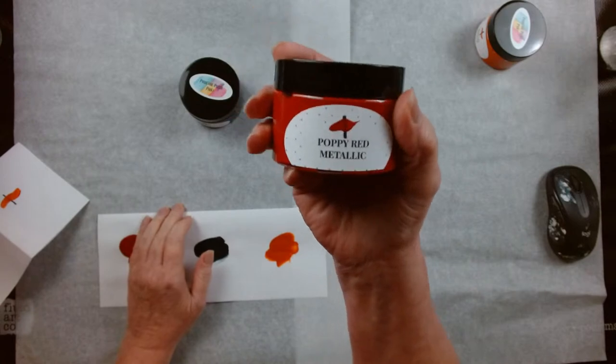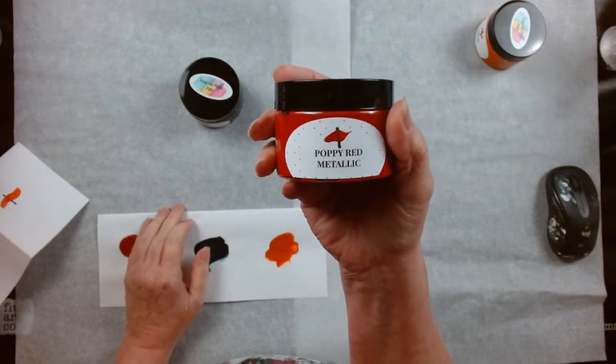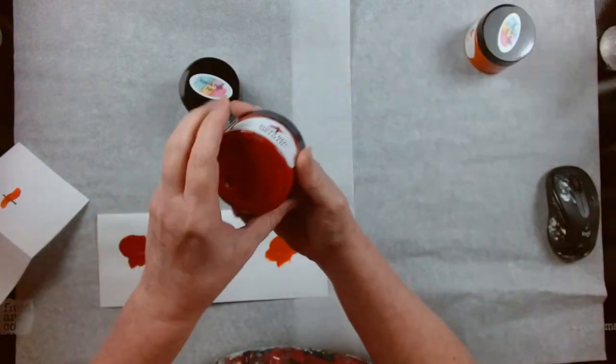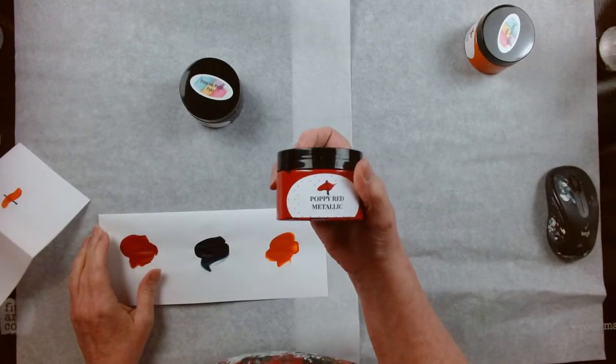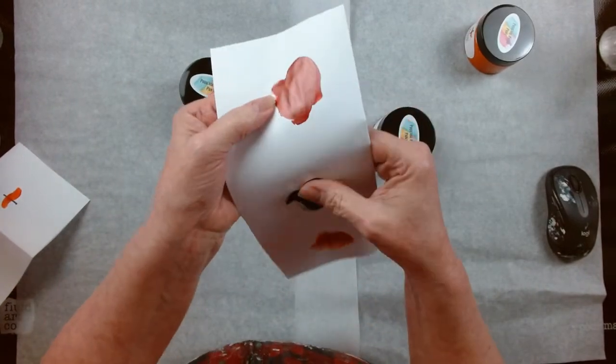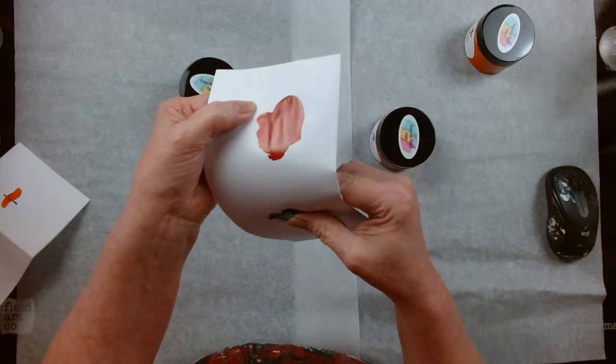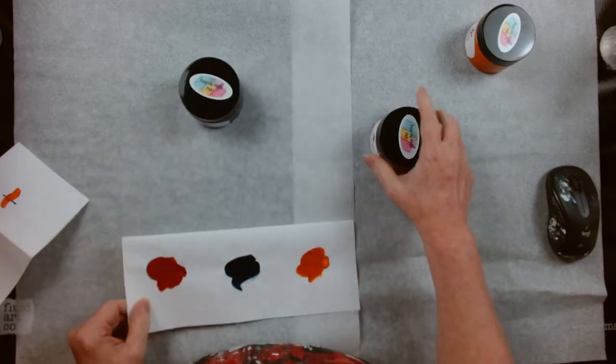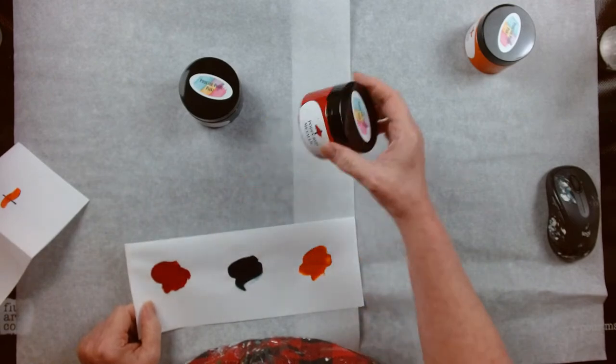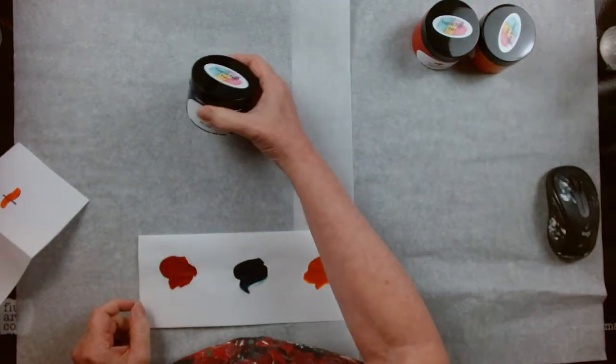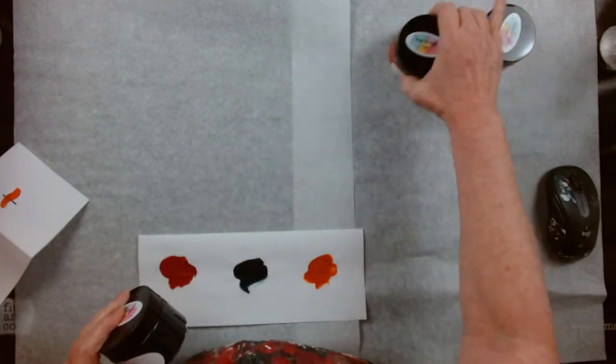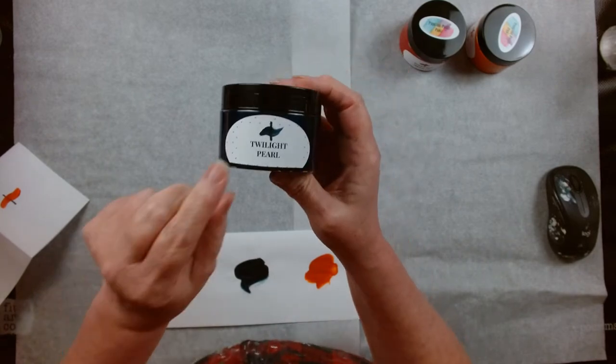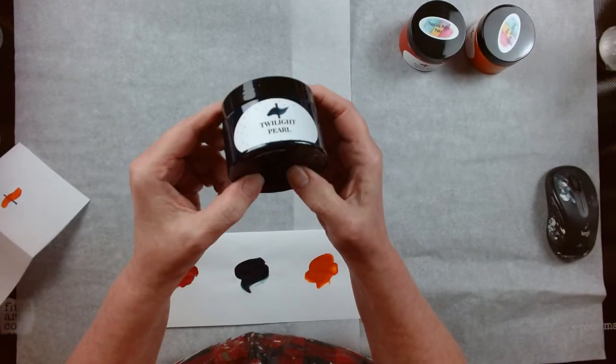Then I did a Poppy Red. This has a gold metallic and this also has a gold metallic. That one's pretty shiny too. It doesn't have quite as much glistening effect, but it's still pretty shiny. I could add more gold to it, but I'm afraid it will pull more orange. And that's named after Poppy.